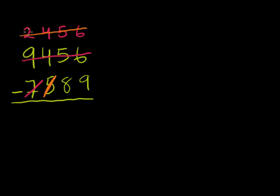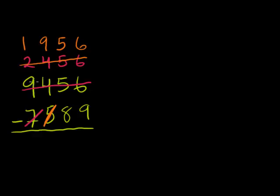Or an even easier way to think about it, what's 24 minus 5? Well, it's 19, so it's going to be 1,956. Let me scroll up a little bit. So it's 1,956. So my original problem has now been reduced to 1,956 minus 89.